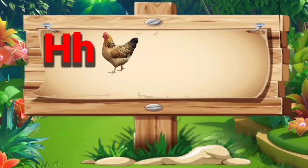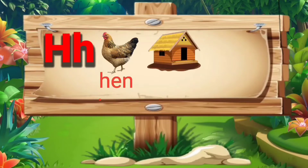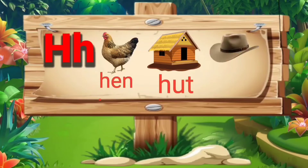H. H for hen: H, E, N — hen. H for hut: H, U, T — hut. H for hat: H, A, T — hat.